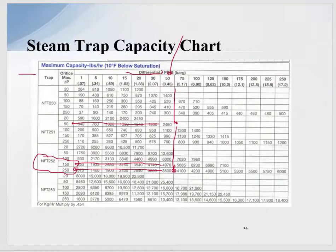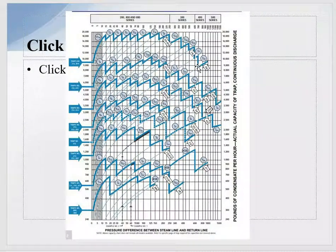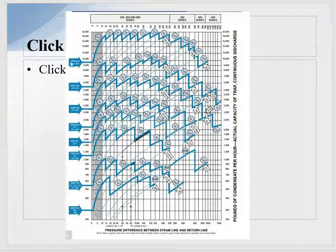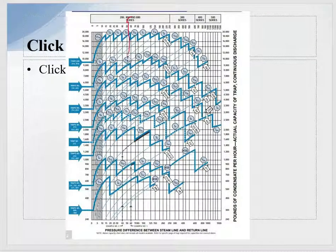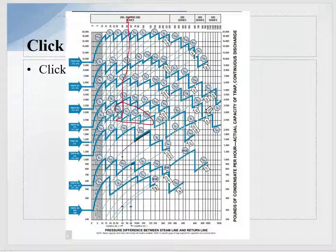For the inverted bucket mechanical trap, the process works the same way as for the float and thermostatic. With a 50 PSI differential pressure, you go down the chart until you find something at 2,000 pounds per hour and make your orifice selection.